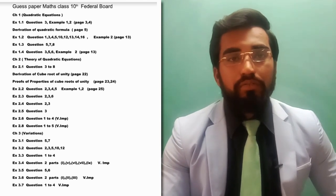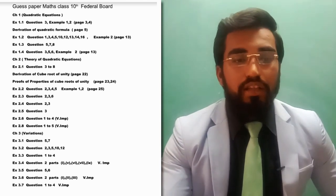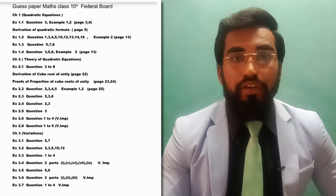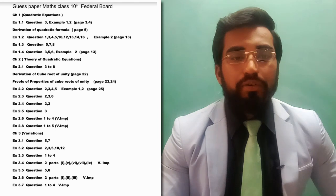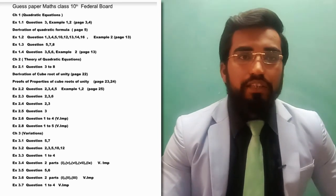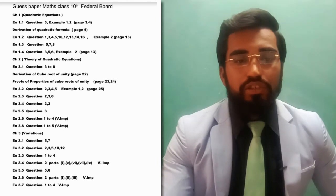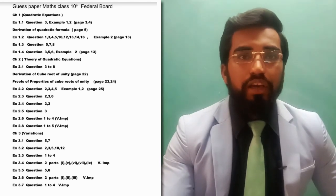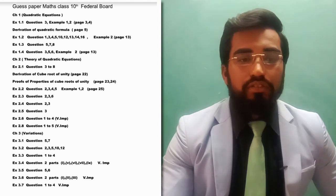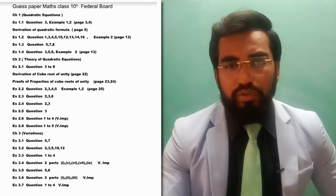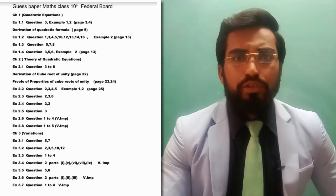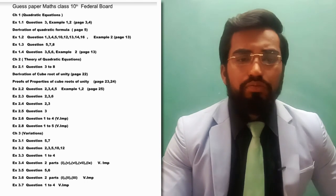Exercise 2.8: question number one to five — these are very very important questions. Next, chapter number three, whose name is Variations. Exercise 3.1: important questions are question number five and seven. Exercise 3.2: question number two, three, five, ten, and twelve. Exercise 3.3: important questions are question number one to four.